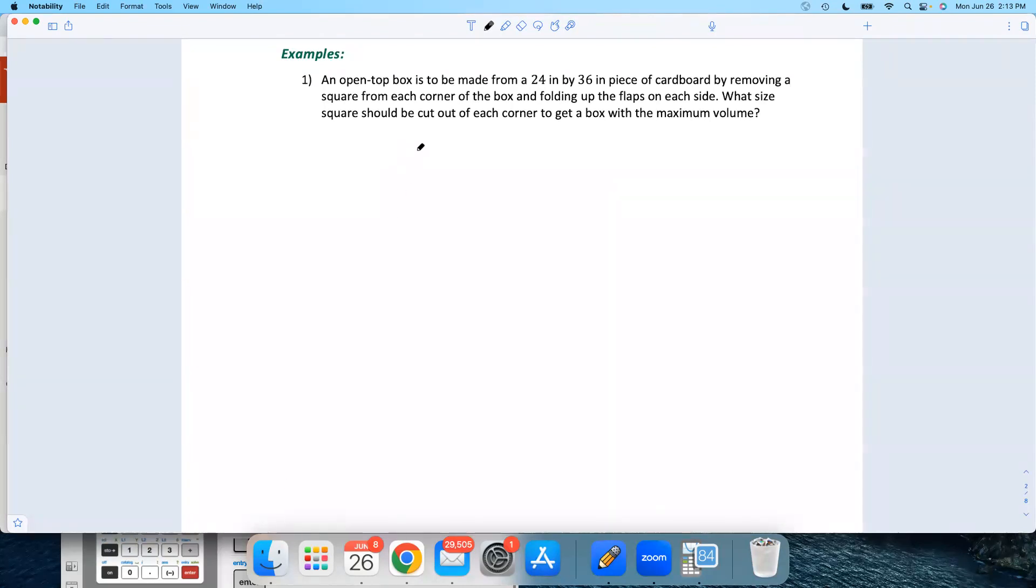Okay, first thing we want to do is draw a picture here. So I've got this rectangle. This side is 24 inches by 36 inches. And what we're going to do is cut a square out of each corner. And we're going to fold all these little flaps up. So this stuff here, this is gone. That's cut out. And then these flaps will fold up. So let's call this distance here, the side of this square here, let's call that X. So each of these squares is X by X.